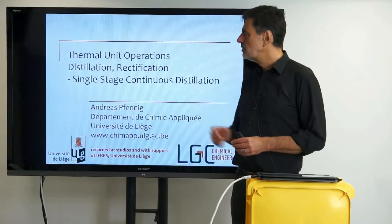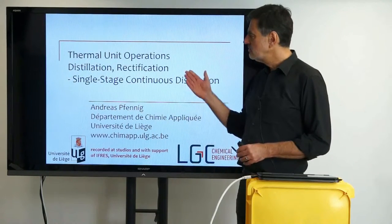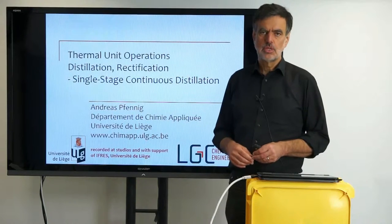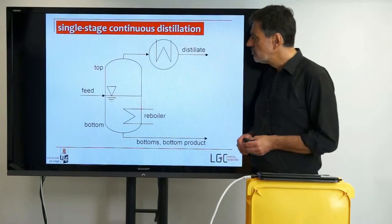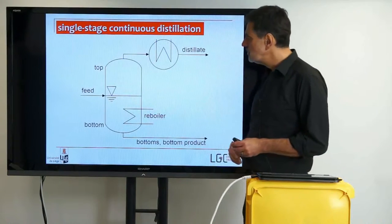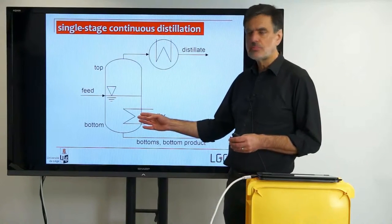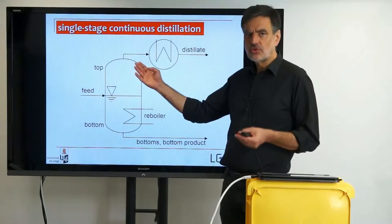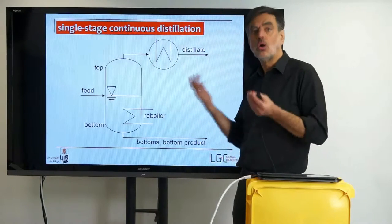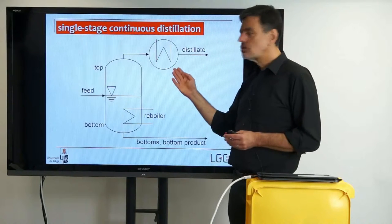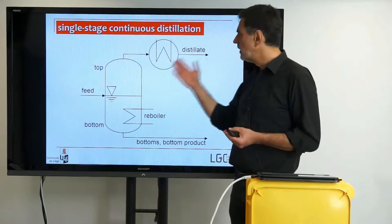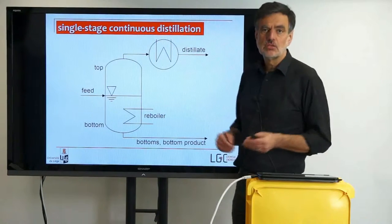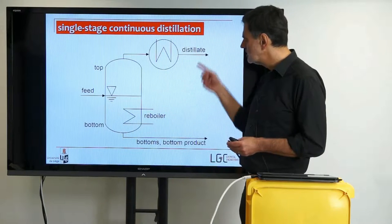Welcome again to this lecture on thermal unit operations. We are still in the section on distillation and rectification, and in this video I would like to show you something on single stage continuous distillation. We have seen in principle how that works: we have a continuous feed being fed into the reboiler, heat is added continuously to partially evaporate the feed. You wind up with a vapor, and if you require a liquid stream in the following process steps you can condense it to a liquid distillate, or omit the condenser if a vapor flow is desired. At the bottom you have the bottom product, so the feed is separated into the distillate and the bottom product.